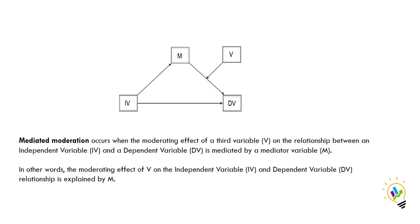Mediated moderation occurs when the moderating effect of a third variable V on the relationship between an independent variable IV and a dependent variable DV is mediated by a mediator variable M. In other words, the moderating effect of V on the IV–DV relationship is explained by M.